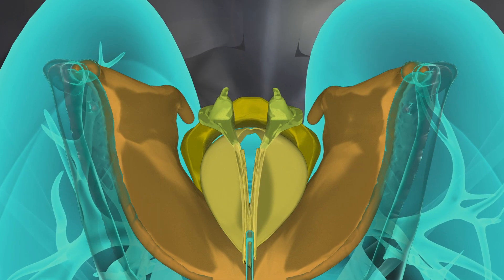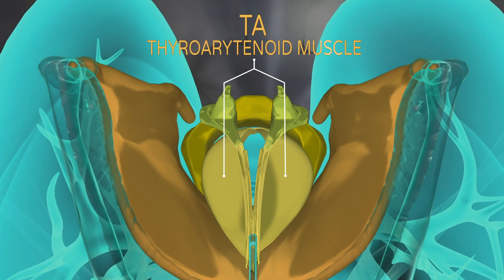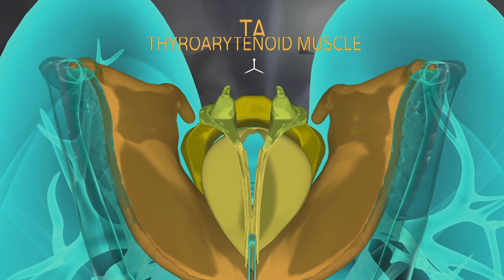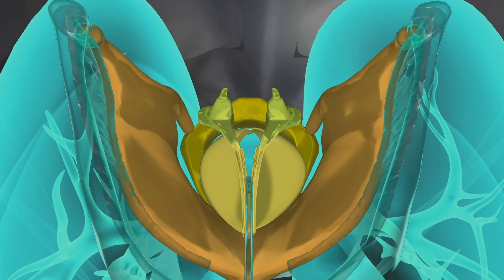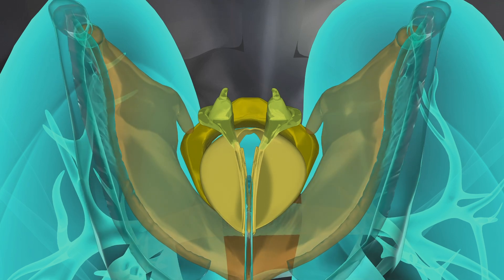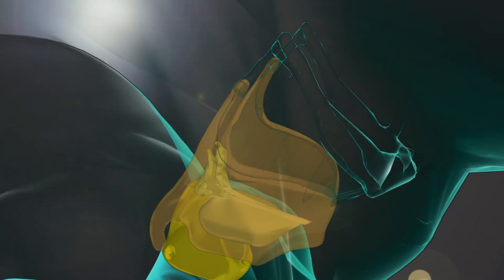The inner layer of the vocal folds is the thyroarytenoid muscle or in short the TA. When this muscle contracts, it also helps the vocal folds come together but also makes the folds thicker and shorter. This muscle is used a lot when we sing the low register known as chest voice.